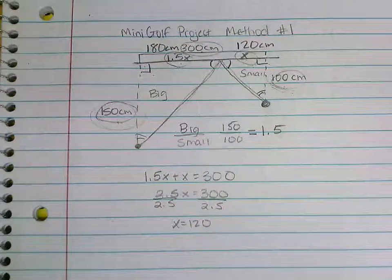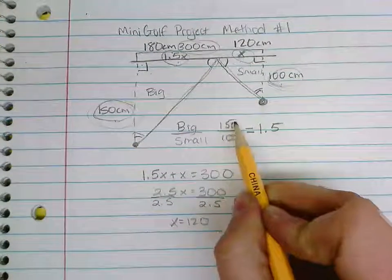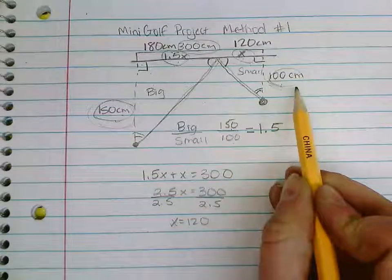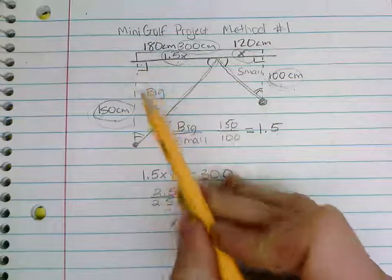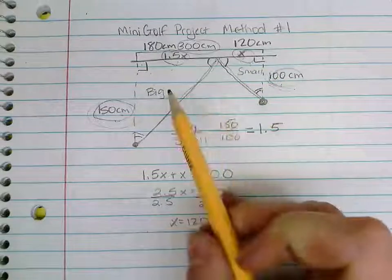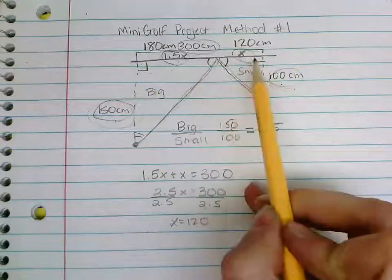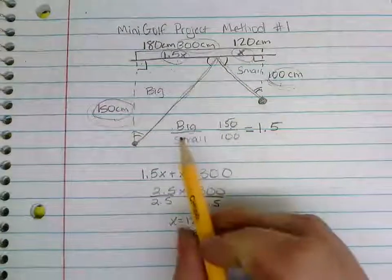Okay, so we can double check these measurements to make sure they're proportional. Just like right here I took the big triangle measurement of 150 and divided by the small triangle measurement of 100. Those are both how far away the tee and the hole are from the wall. Well, these measurements here are both how far against the wall this triangle is going to run.